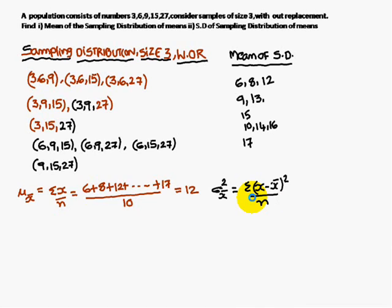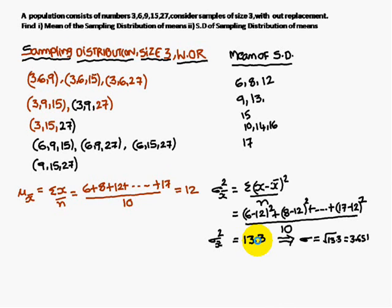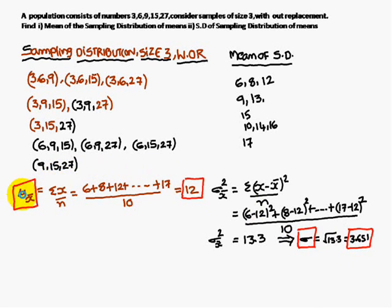Next, we find the variance of the sampling distribution. We compute (6−12)² + (8−12)² + (12−12)² + ... + (17−12)², all divided by 10. The result is 13.3. Therefore, the standard deviation is √13.3 = 3.651. So the mean of the sampling distribution is 12 and the standard deviation is 3.651.